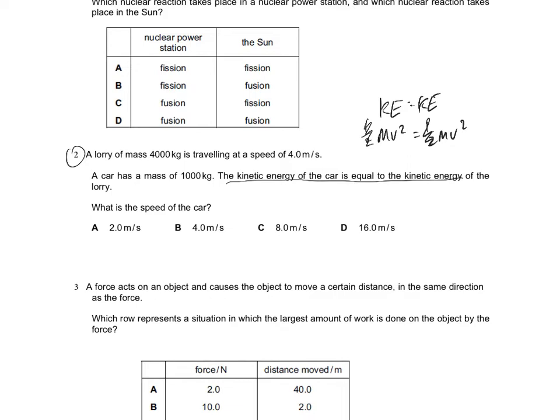If we then put in the mass of the lorry, which is 4,000, and times that by its speed, which is 4 squared, that's got to be equal to the mass of the car, 1,000, times by its speed of velocity squared. Type that into our calculator. You see that we get v squared equals 64, and therefore v is the square root of 64. That gives us an answer of 8.